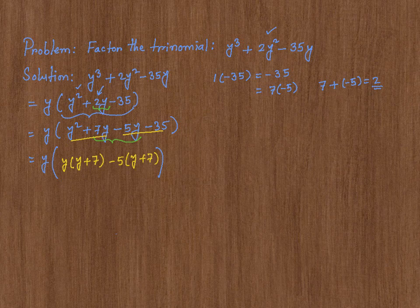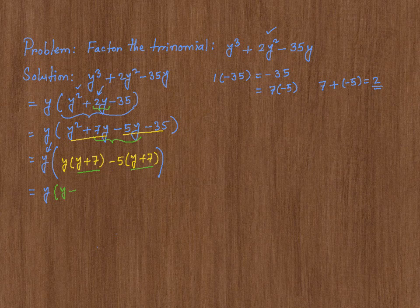Now, notice that y plus 7 is common in both of them, so I can factor that out as well. So, y times y plus 7, then times y minus 5.